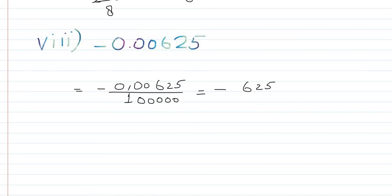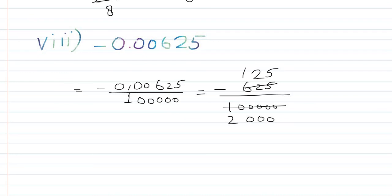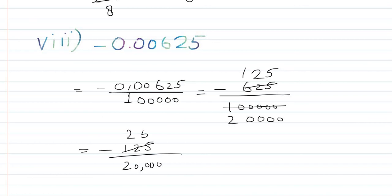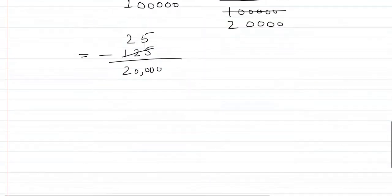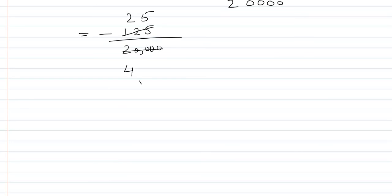We remove the leading zeros from the numerator, keeping the non-zero digits. We get minus 625 over 100000. Now we cut by 5: 625 ÷ 5 = 125, 100000 ÷ 5 = 20000, giving minus 125 over 20000. Dividing again by 5: 125 ÷ 5 = 25, 20000 ÷ 5 = 4000, giving minus 25 over 4000.